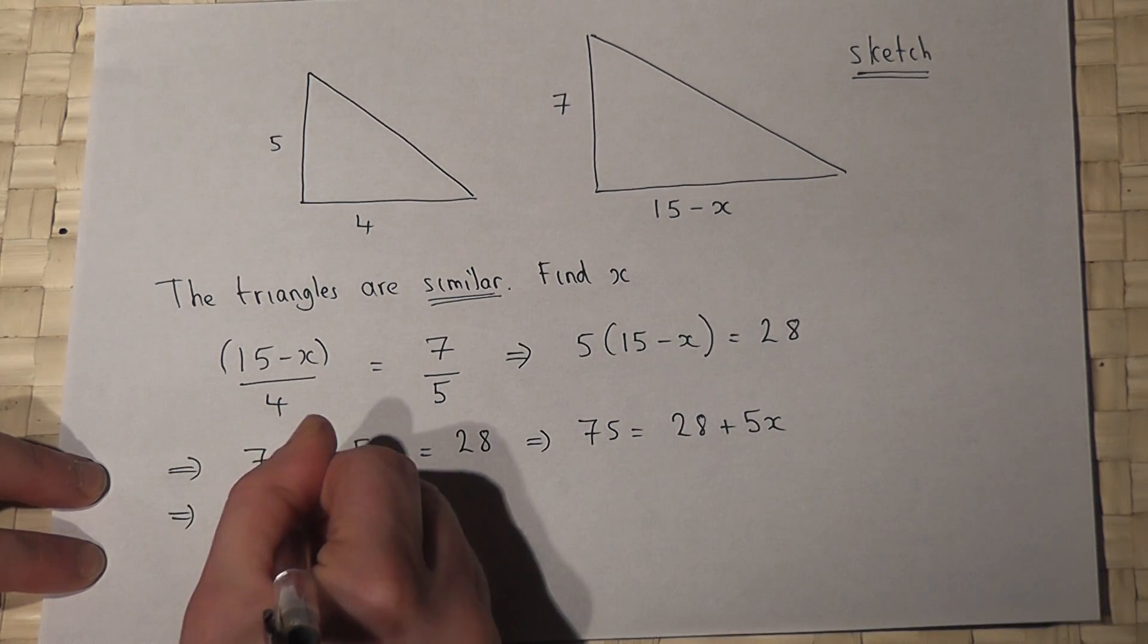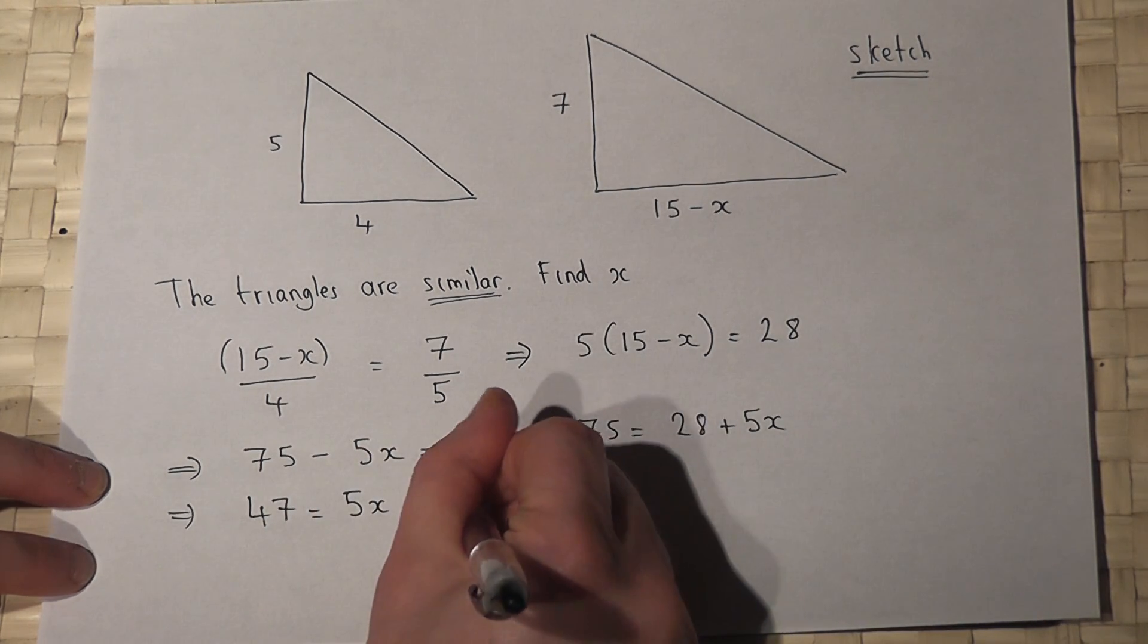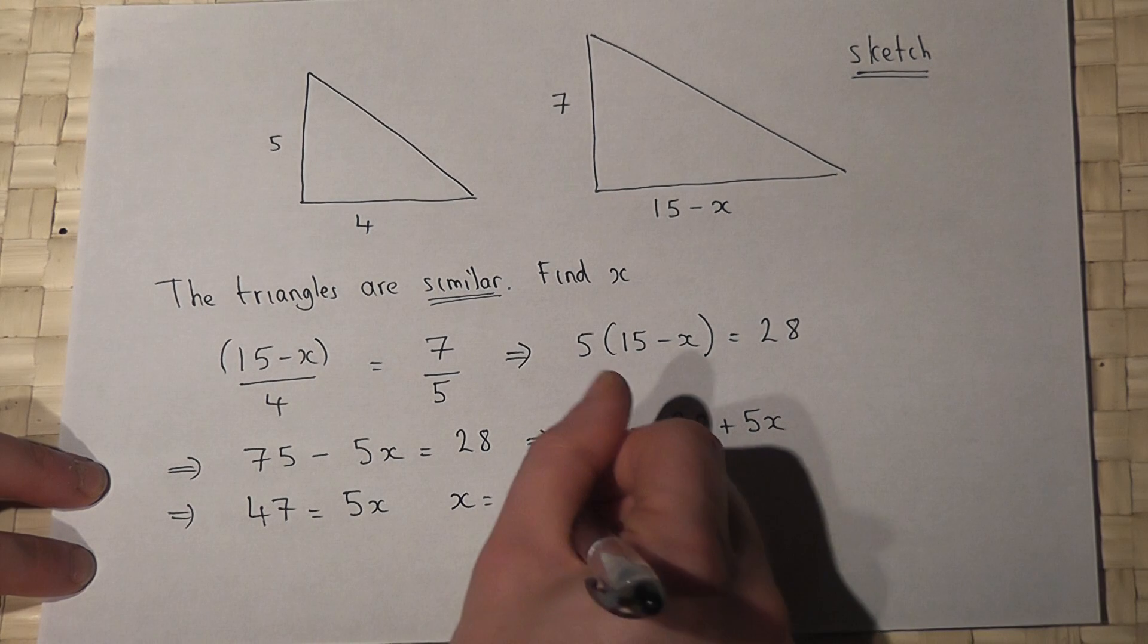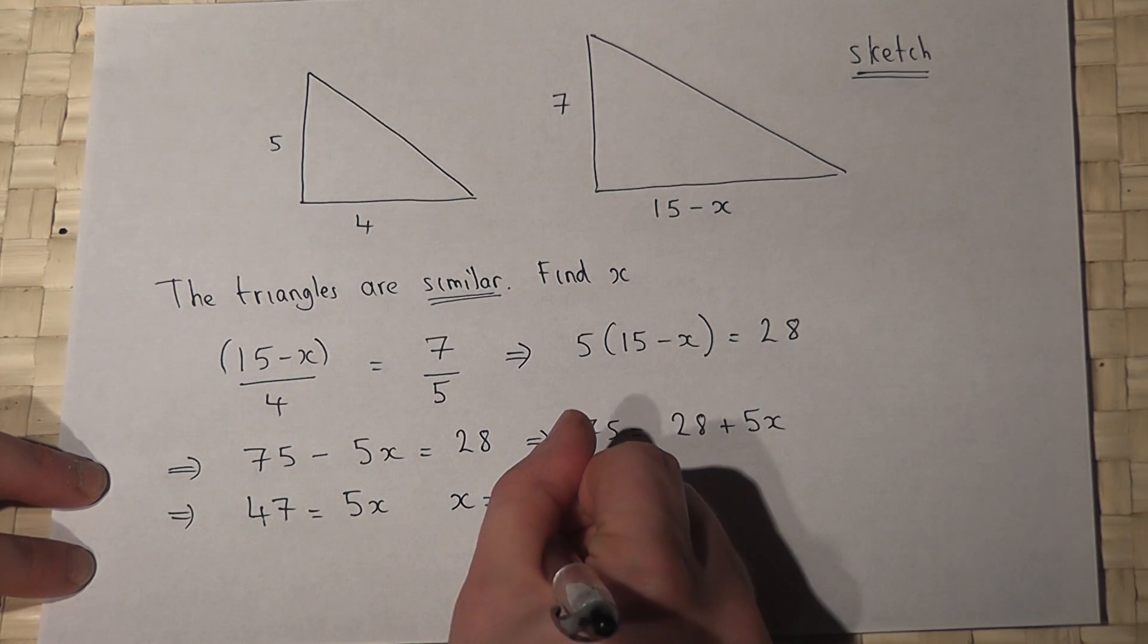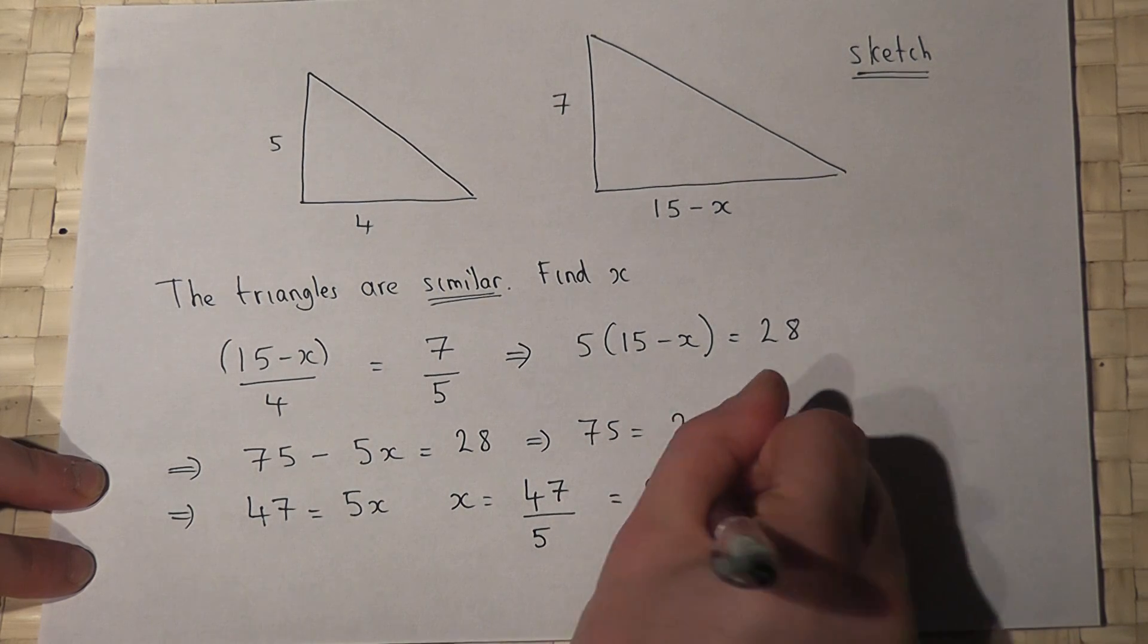So 47 equals 5x. So x equals 47 divided by 5, which is 9.4.